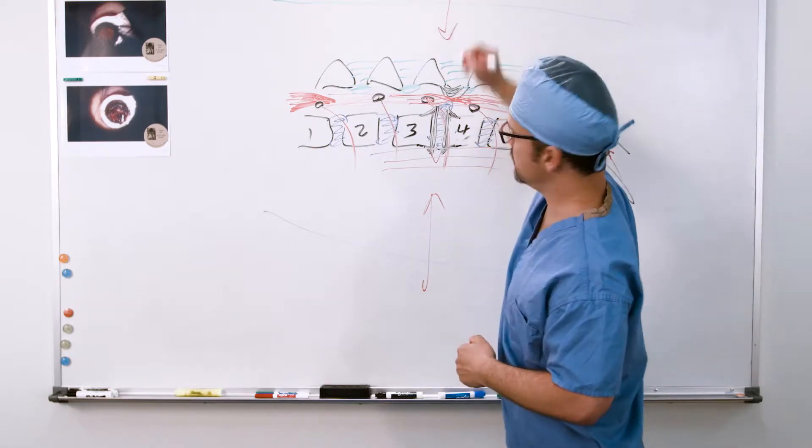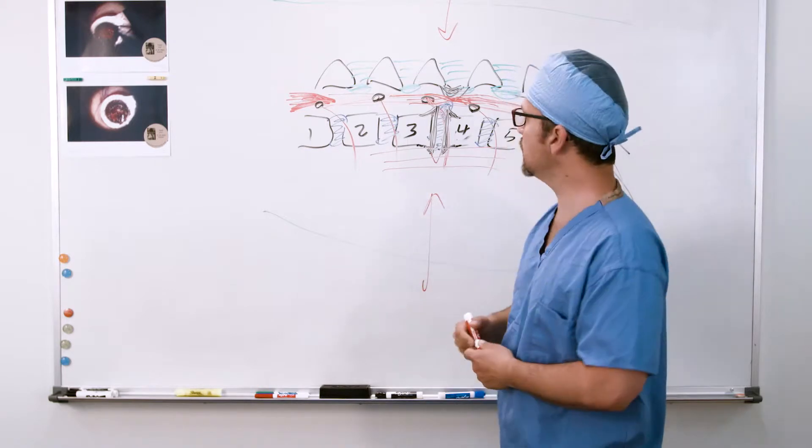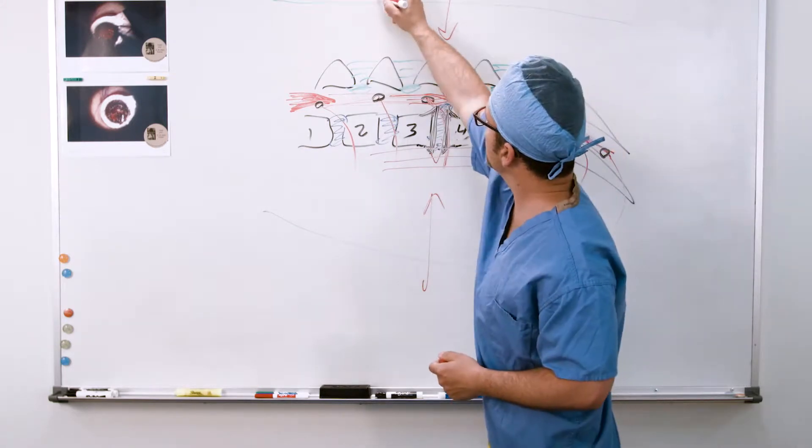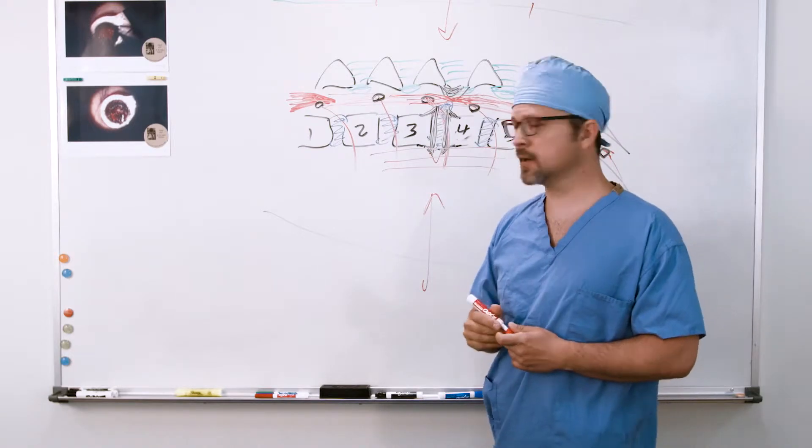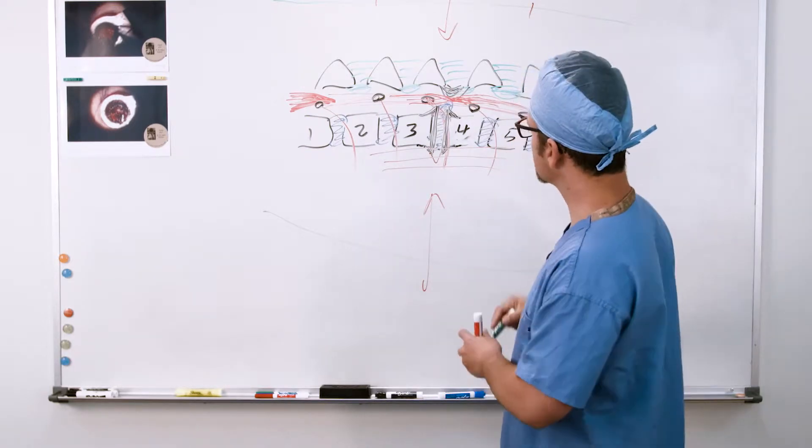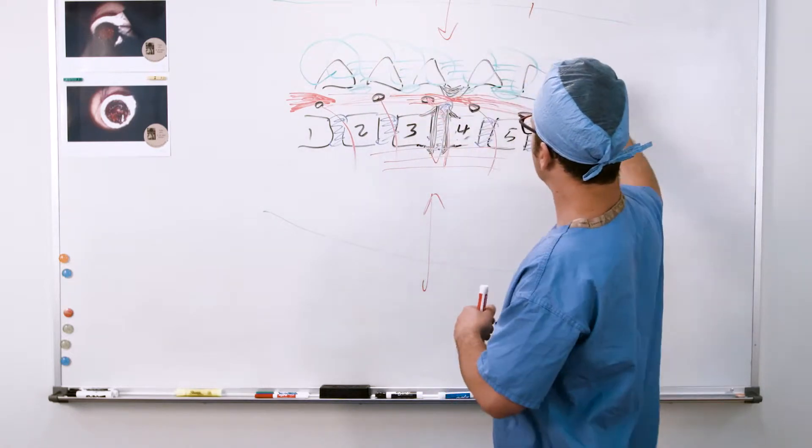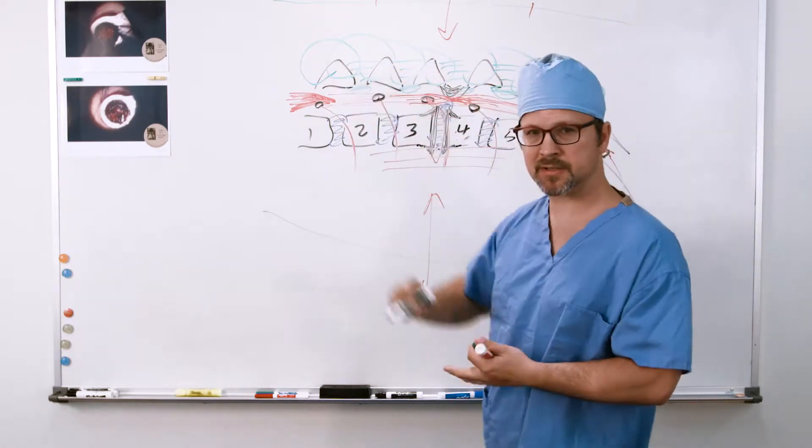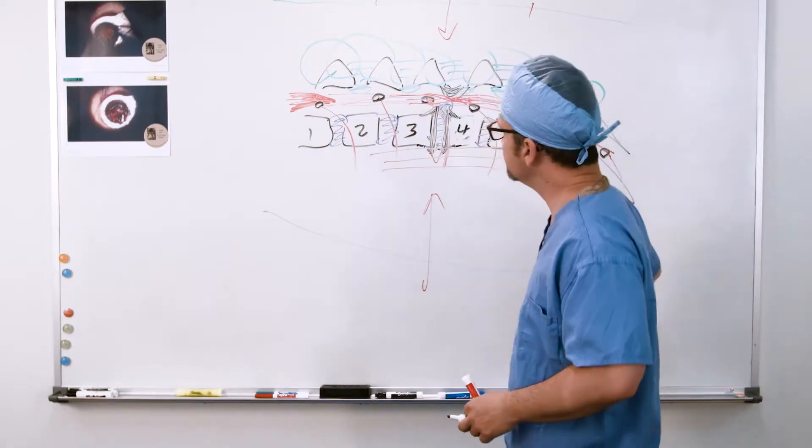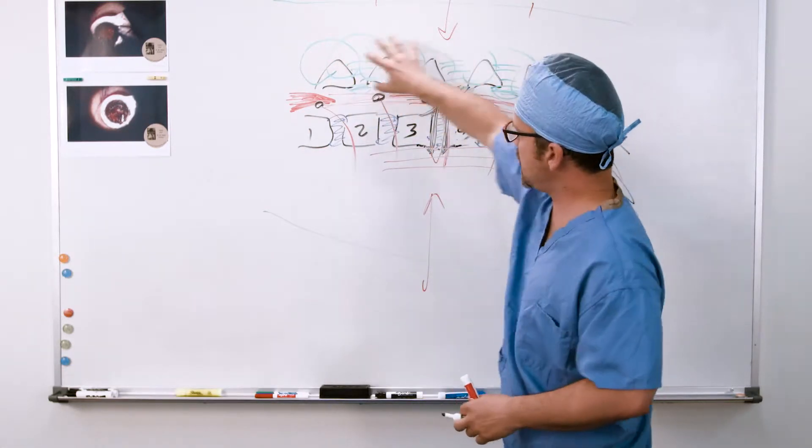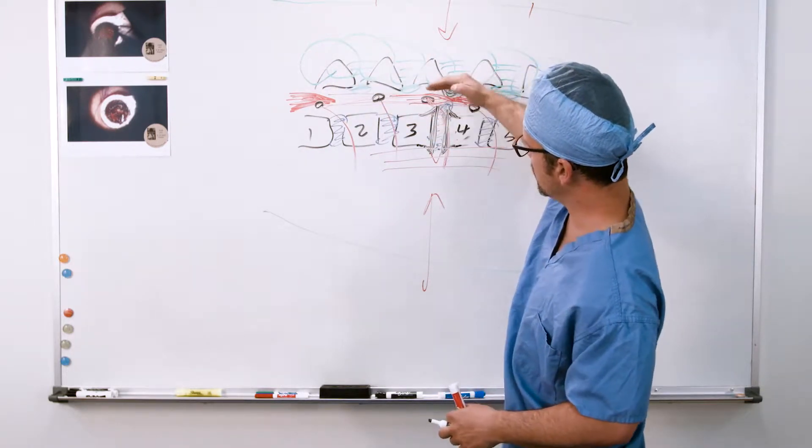All your muscles are attached to these black bony plates - the pokey things you feel in the back. To get to the disc, which is in front of the nerves, how are you going to get to the front through the back? All the muscles are attached to those bones.